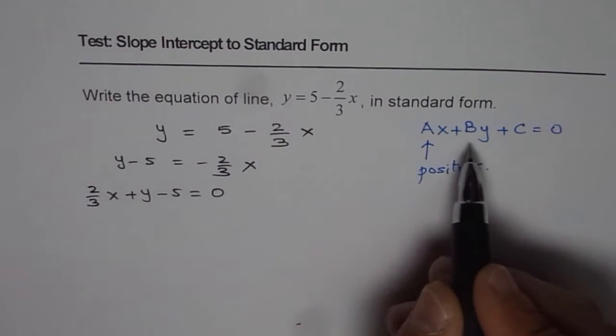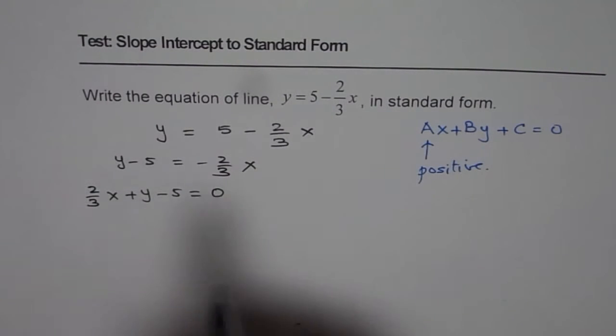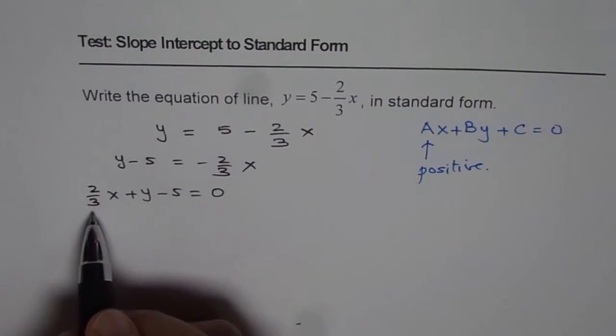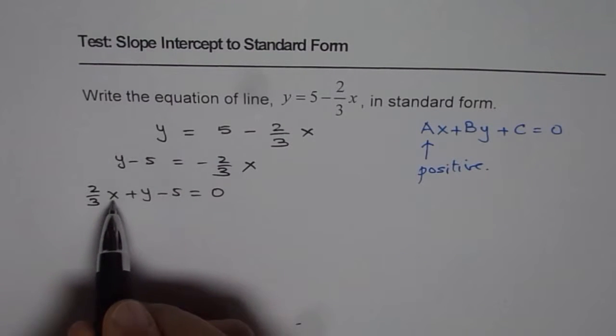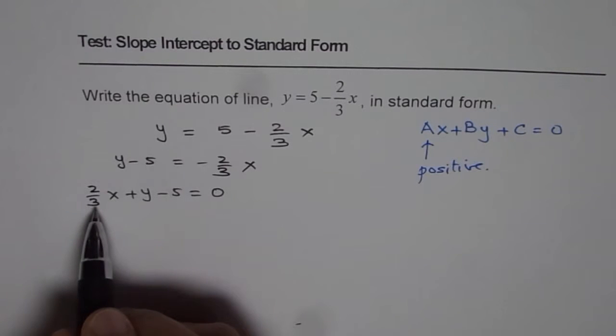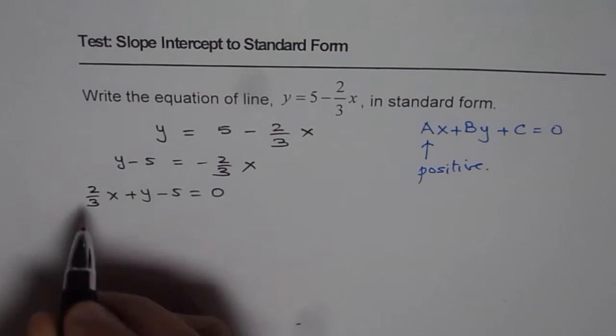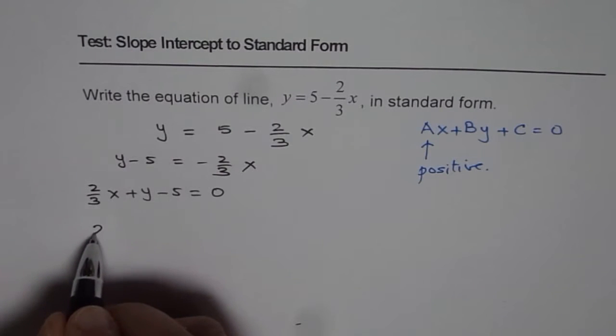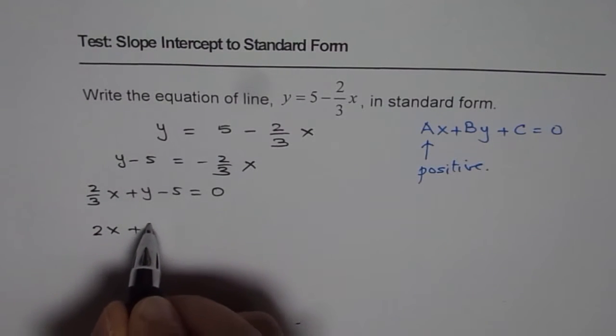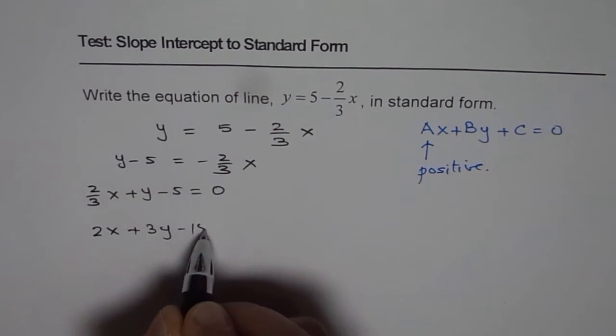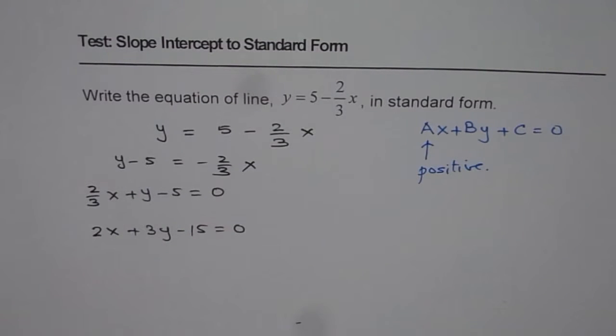This is very similar to the form given to us, but we do not like to have fractions for x in this particular case. The leading coefficient should be, preferably, positive and integer value. So, at this stage, we'll multiply by 3 all the terms. When we multiply by 3, we get 2x plus 3y minus 15 equals 0. That becomes the equation in standard form.